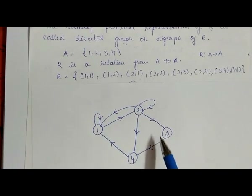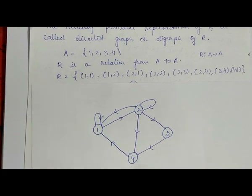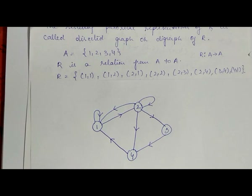So that is another form of relation. There are four representations of a relation: first is tabular, second is graphical, third is matrix, and fourth is digraph. This is all about the representation of a relation. I hope you understood this, and if you have any query you can ask in our comment section. Keep watching our videos, thank you so much.